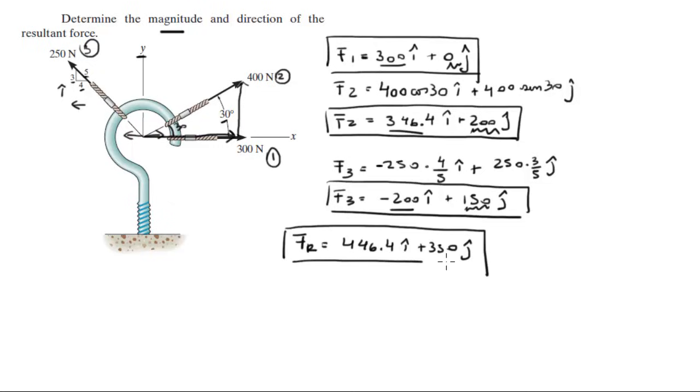Now this is the Cartesian vector of the resultant force, basically telling us that the resultant force is going to be somewhere over here on the x, somewhere over here in the y, so the resultant force is going to be somewhere over there. But what we want to find is the magnitude and we want to find the angle, which is the direction.